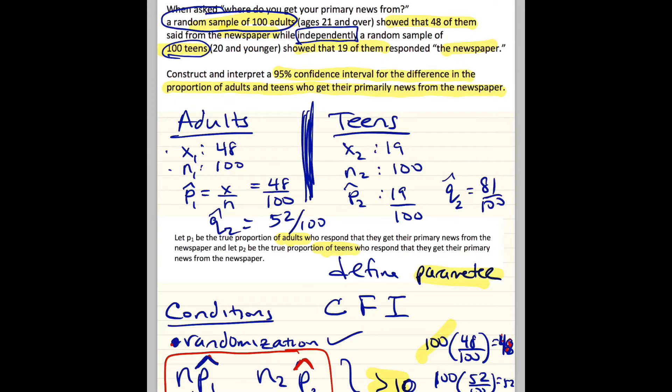So that's 48, 100, 52 out of 100, 52, and so on. Then, you have to say, since all values are greater than or equal to 10, we can assume that distribution is approximately normal. Okay, to proceed. So now step 2 is going to be the formula.